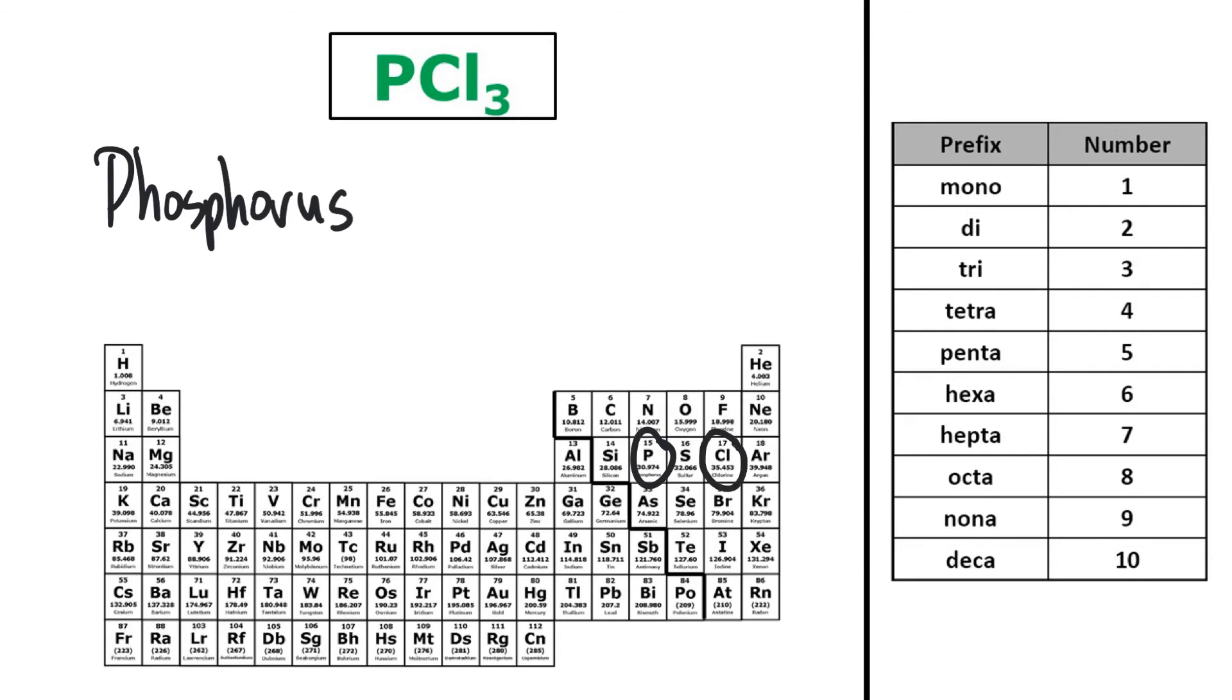And then I have Cl3, so chlorine will become chloride, and there's three of them. So I'll use the prefix tri. So it will be trichloride. So the name of this compound is phosphorus trichloride.